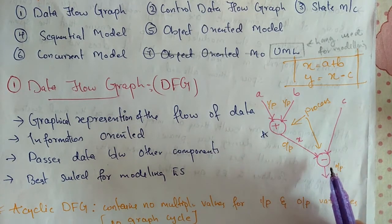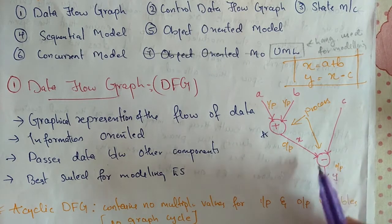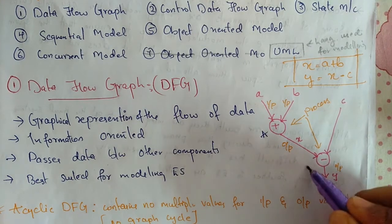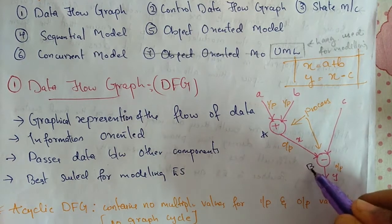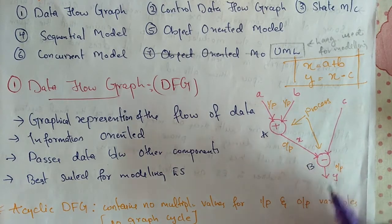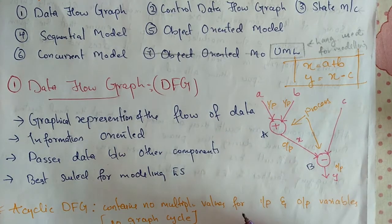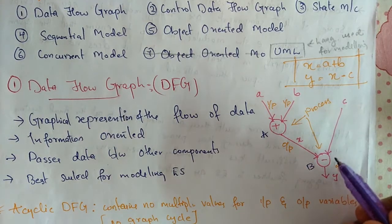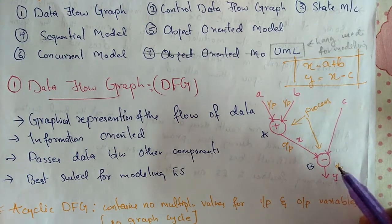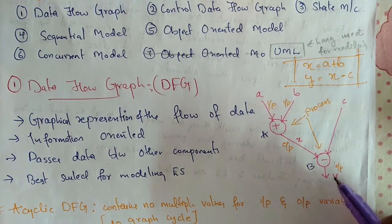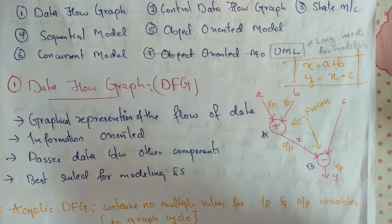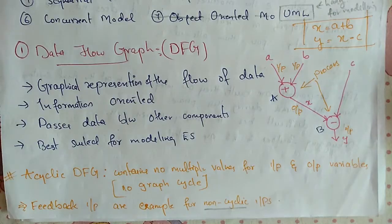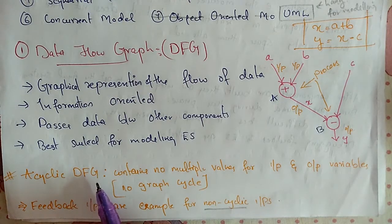X goes as an input to process B, and c also comes as an input to process B. After processing, the output is y. Next, we'll see the acyclic data flow graph. In this type, there will be no multiple values for input and output — it does not form a cycle. Feedback inputs are examples of non-cyclic inputs.